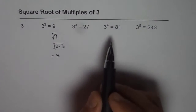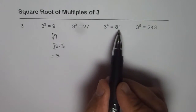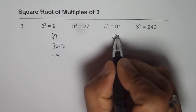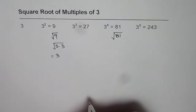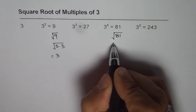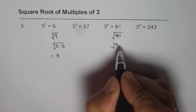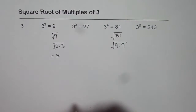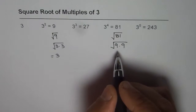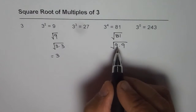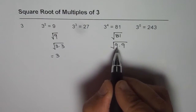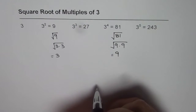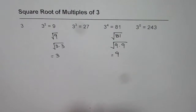Let us also explore how to find square root of 81. Now 81 can be written as 9 times 9. For the square root, we can take away one of the 9's and write this as 9. So square root of 81 is 9.